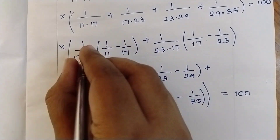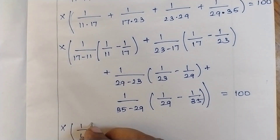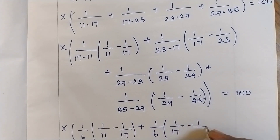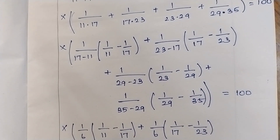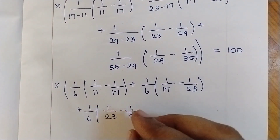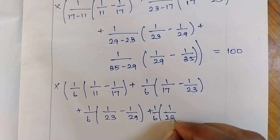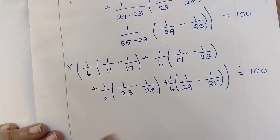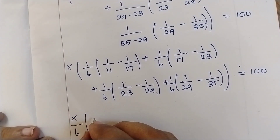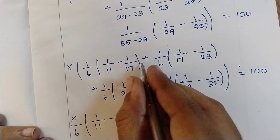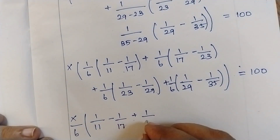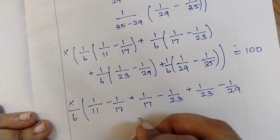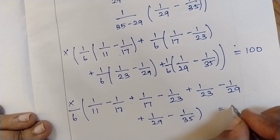Now simplifying: x × [1/6 × (1/11 − 1/17) + 1/6 × (1/17 − 1/23) + 1/6 × (1/23 − 1/29) + 1/6 × (1/29 − 1/35)] = 100. Since 1/6 is common in each term, take it out: x/6 × [(1/11 − 1/17) + (1/17 − 1/23) + (1/23 − 1/29) + (1/29 − 1/35)] = 100.